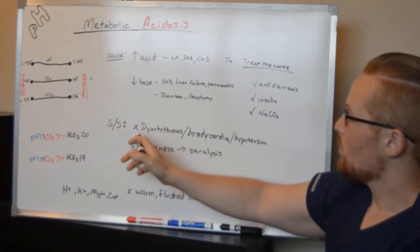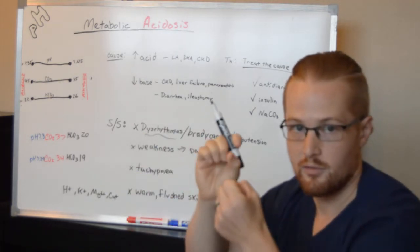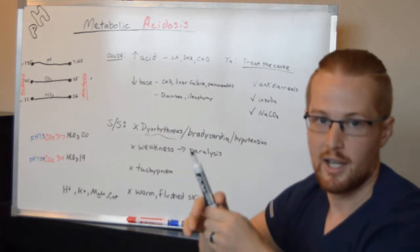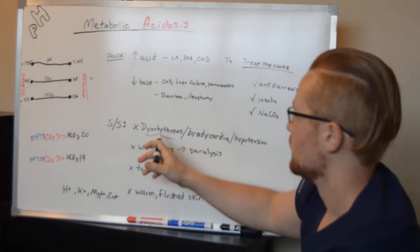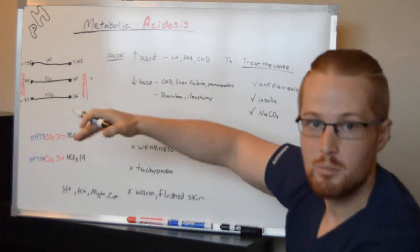Signs and symptoms: with all acid-base disorders, you're going to have dysrhythmias because the heart needs a very particular electrolyte balance to function properly. When we talked about alkalosis, there was numbness and tingling because of hyperexcitability. This is going to be the opposite - you're going to be depressed.